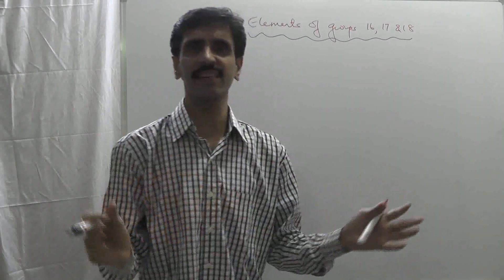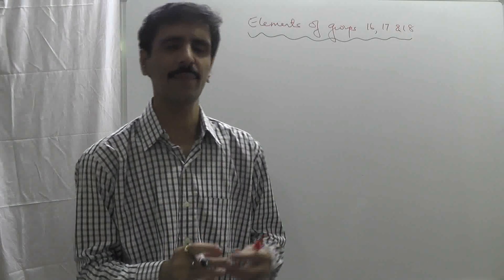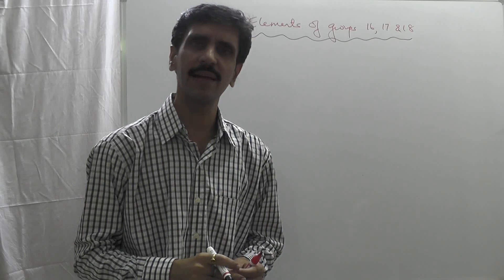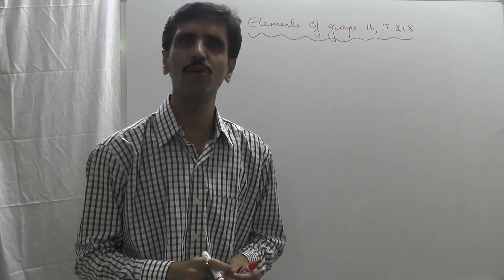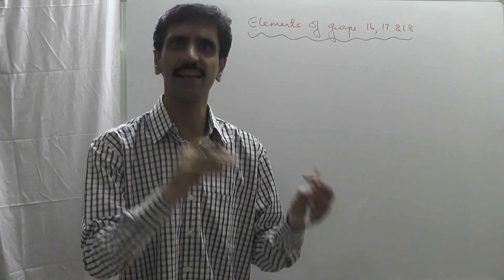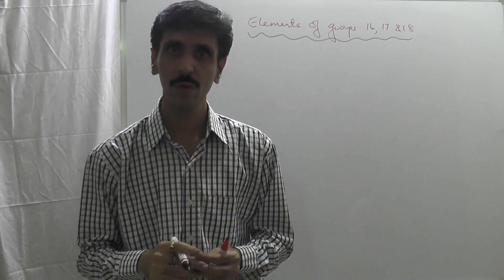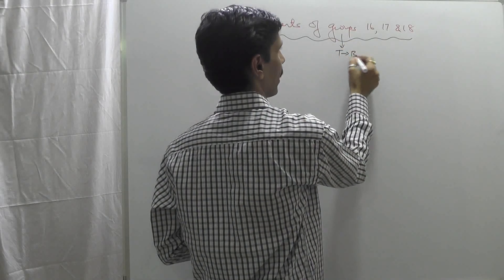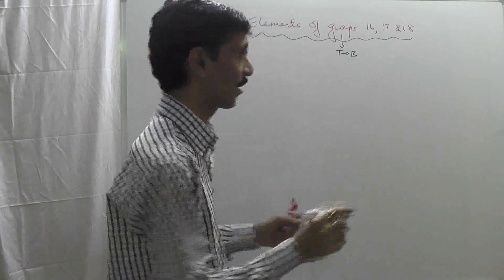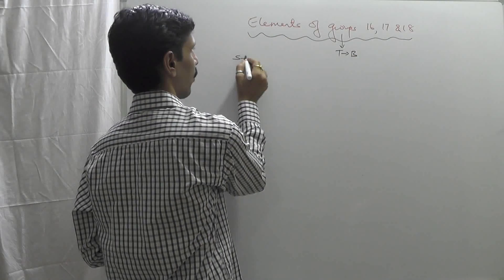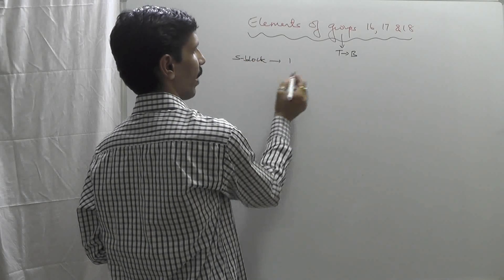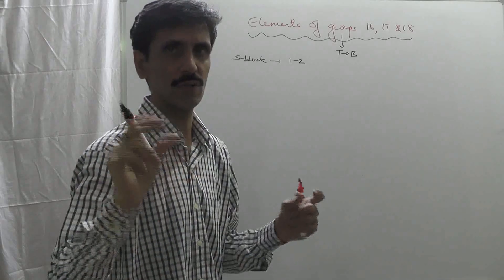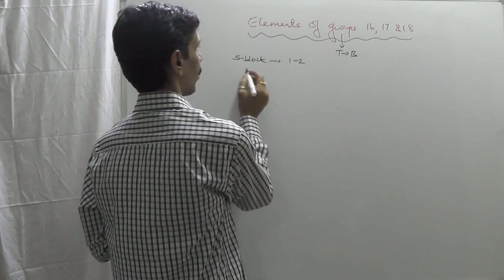First of all, let me begin with an introductory session — just an introduction about what exactly this chapter is all about. The elements available in the periodic table are classified into four categories and they are assigned particular groups. The arrangement goes from top to bottom in the periodic table. Starting with the S-block elements, the groups are going to be one and two.